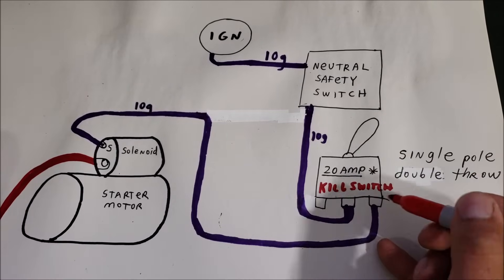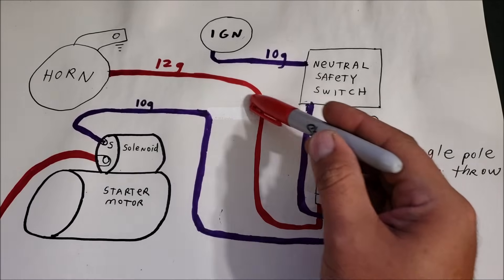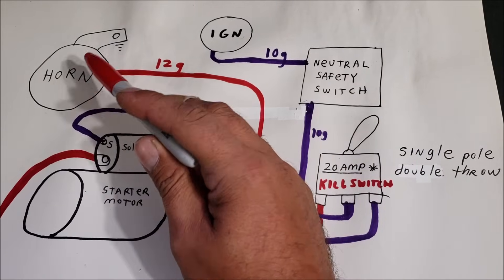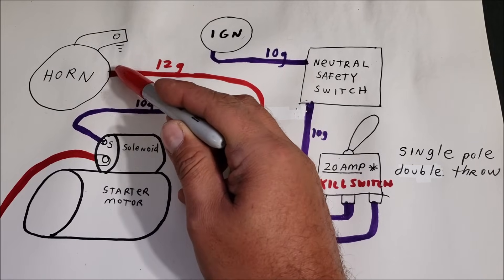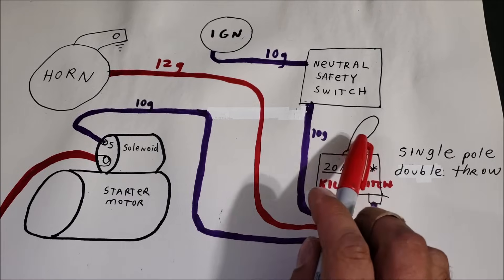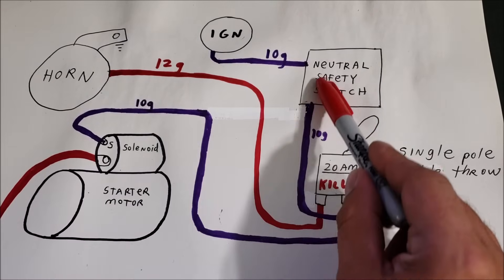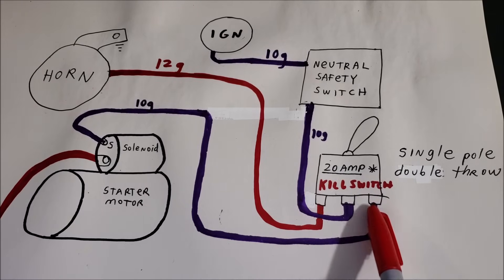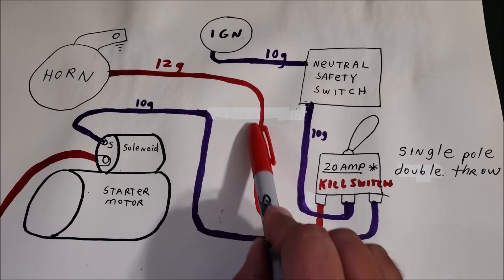Then we can take that other terminal on the switch and wire that to any type of alarm. In this case, we're going to wire it straight to the horn of the car. We're going to have to tap in there and splice in here. But now what happens when you turn your kill switch or engage the kill switch, it's going to send power through the neutral safety if you're in gear. Instead of sending it to start the motor, we're not starting anything. Instead, we're sending power straight over here to the horn.